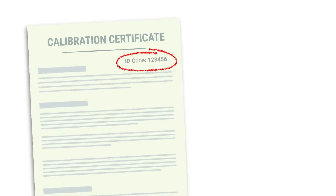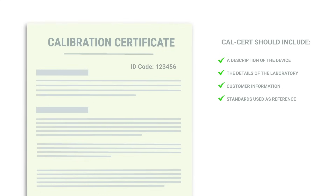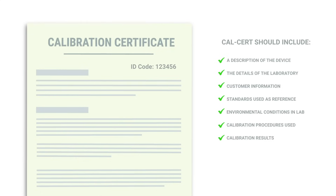The calibration certificate, or CALCERT, should include a description of the device, the details of the laboratory, customer information, a list of standards used as reference, environmental conditions during calibration, calibration procedures used, calibration results, and the name and signature of the technician who carried out the calibration.